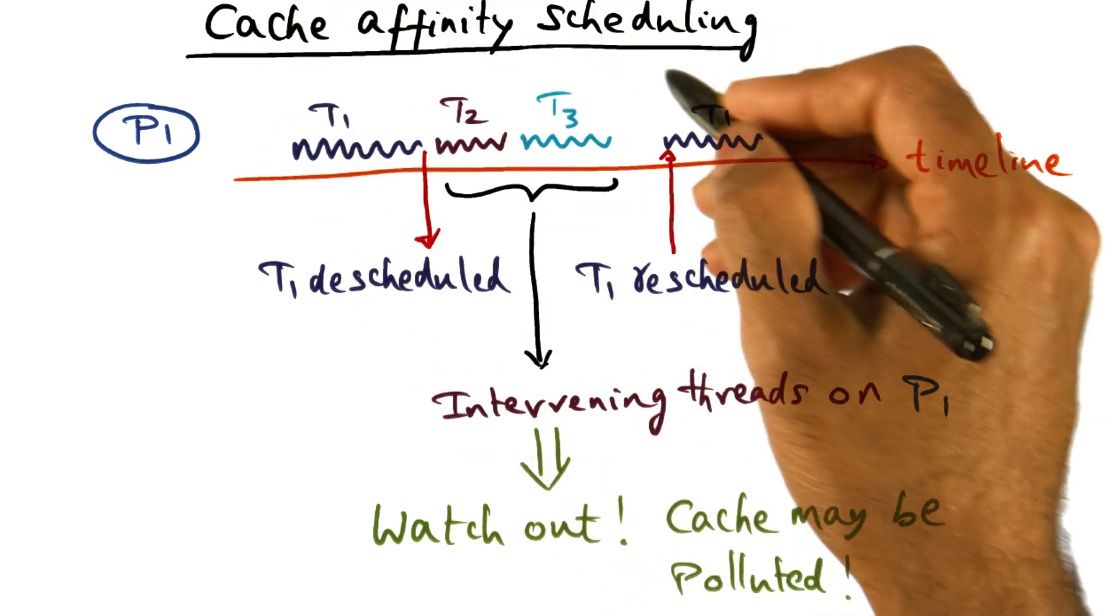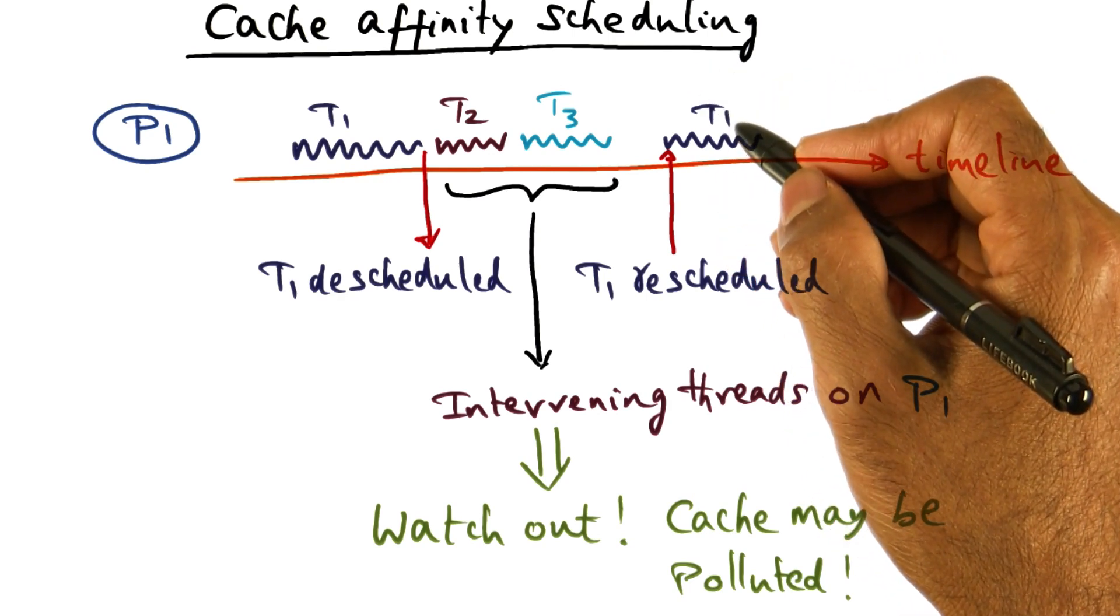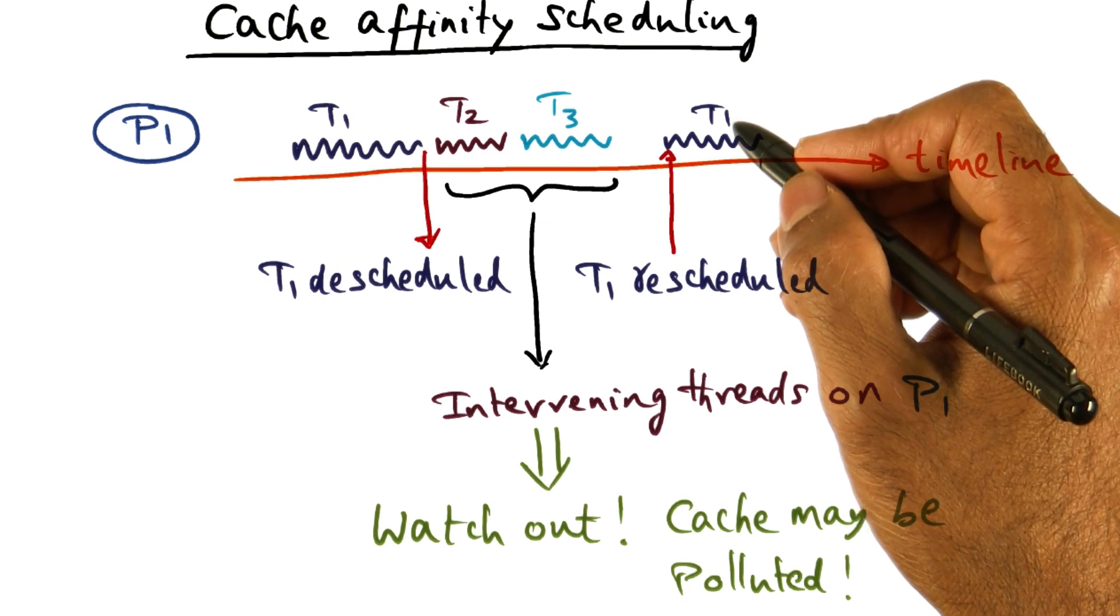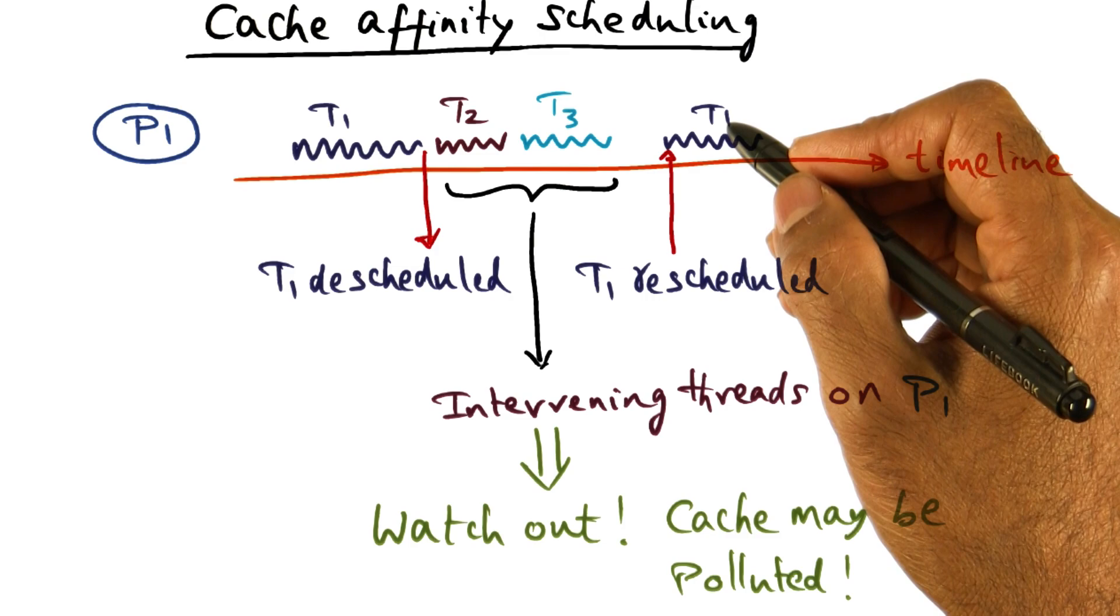So now that I've introduced the idea of cache affinity for a processor with respect to a particular thread, we're now ready to discuss different scheduling policies that an operating system may choose to employ.